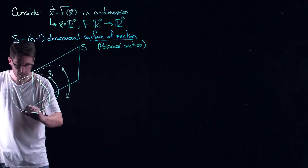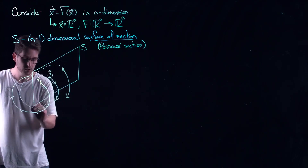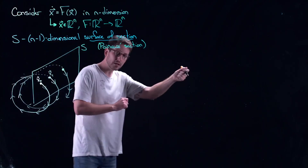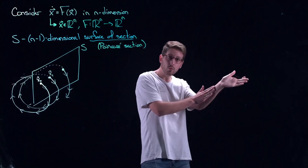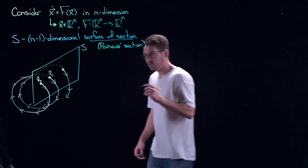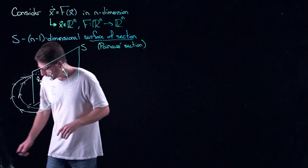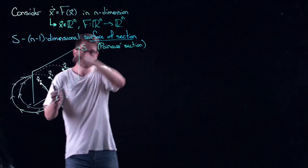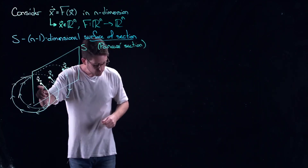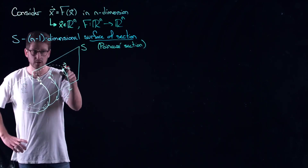Whenever I'm talking about a surface of section or a Poincaré section, it is going to be what we call transverse to the flow. Essentially, this is like a knitting needle — it has to pierce it and go right through it. I can't come up and just kiss it and walk away; I've got to go right through the section. There is an art to defining surfaces of sections.